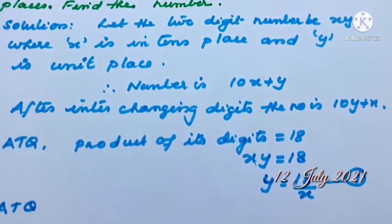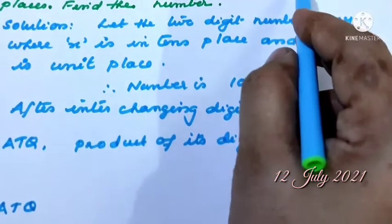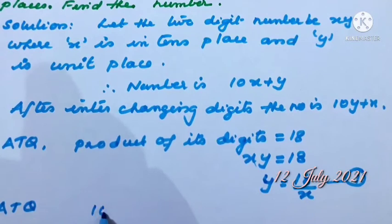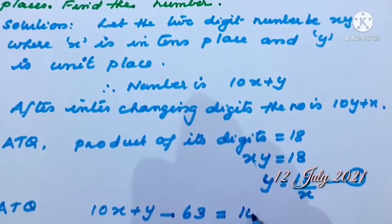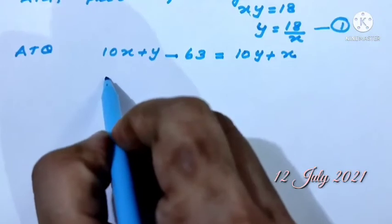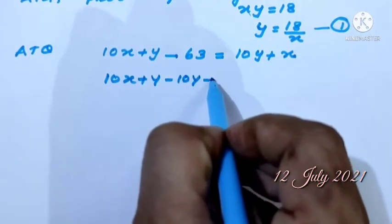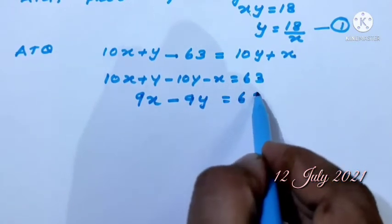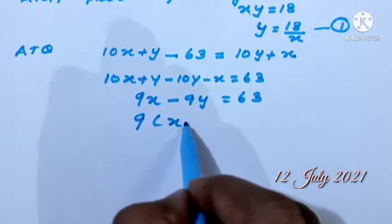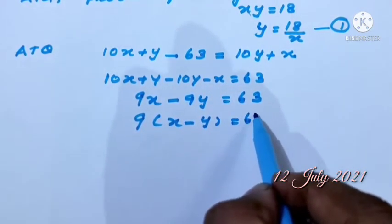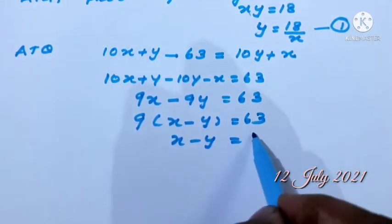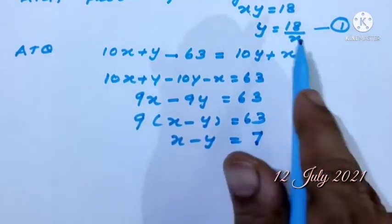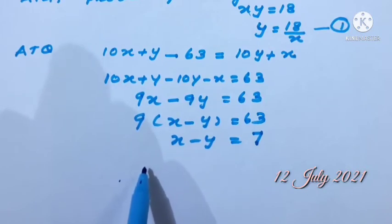The second condition: if 63 is subtracted from the number 10X plus Y, the digits are interchanged giving 10Y plus X. So: 10X plus Y minus (10Y plus X) equals 63. This gives 10X minus X minus 10Y plus Y equals 63, that is 9X minus 9Y equals 63. Dividing by 9: X minus Y equals 7.